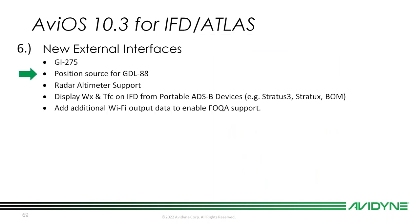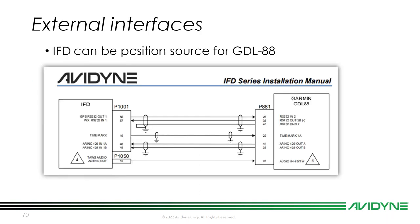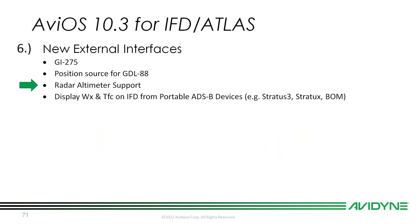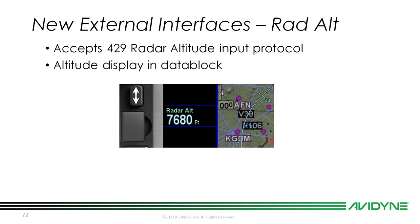We're also approved as the position source for the GDL-88. Previously you needed a GDL-88 that could produce its own GPS position source or get it from somewhere else — now we can send it a GPS position directly. Radar altimeter support was another addition: we can now take a radar altimeter, pump it in over ARINC 429, and show it on a configurable data block on the IFD — great news for our helicopter customers.